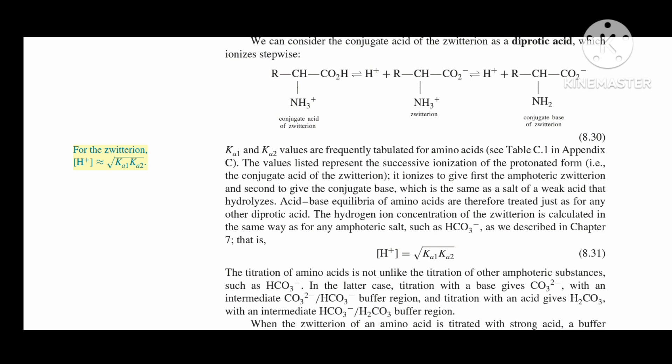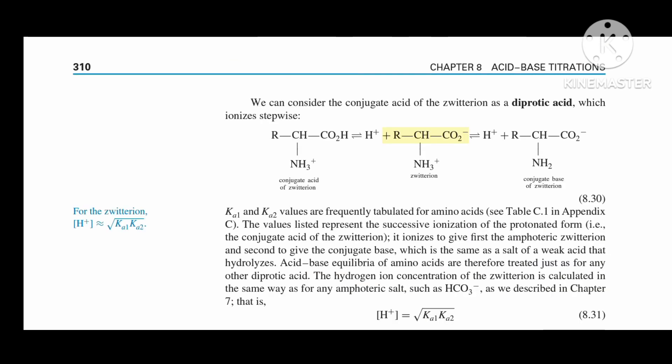For the zwitterion, H+ approximately equals square root of Ka1 Ka2. The ionization proceeds: R-CH-CO2- NH3+ (zwitterion) ionizes to H+ + R-CH-CO2- NH2 (conjugate base of zwitterion), equation 8.30.